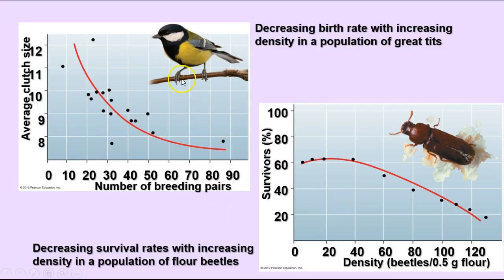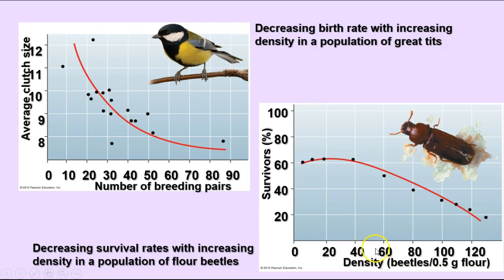Here we have a couple of examples. The great tit bird shows that as the number of breeding pairs increases, the average clutch size — the number of eggs laid per pair — decreases over time. That makes sense because high egg production would increase the population too fast for the environment to keep up. For flour beetles, as their density per half gram of flour increases, their survival time decreases, which prevents the population from using up all the resources.